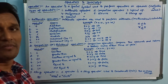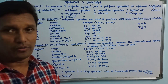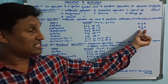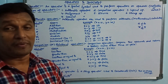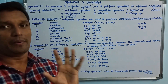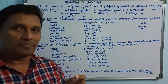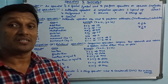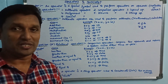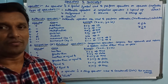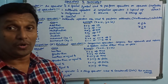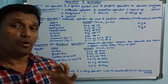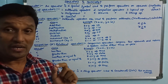Operands means either variables or values. Operator is a special symbol used to perform a particular operation on operands. Here one symbol performs one particular operation — for example, plus for addition, minus for subtraction, and symbols like less than, greater than, or equal to.